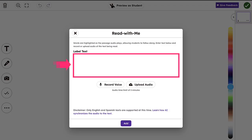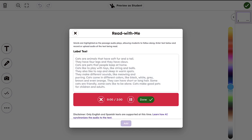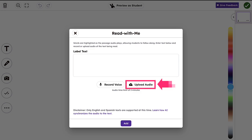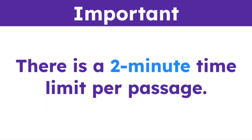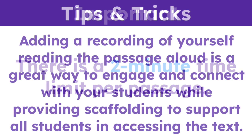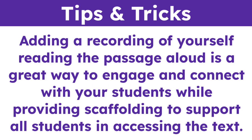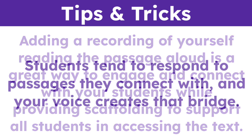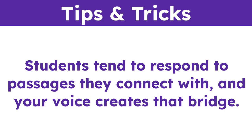Simply type or paste the reading passage that you would like students to engage with in the label text box. Then record your own voice reading the passage aloud or upload existing audio that corresponds to the text. There is a two-minute time limit per passage. Adding a recording of yourself reading the passage aloud is a great way to engage and connect with your students, while providing scaffolding to support all students in accessing the text. Students tend to respond to passages they connect with, and your voice creates that bridge.